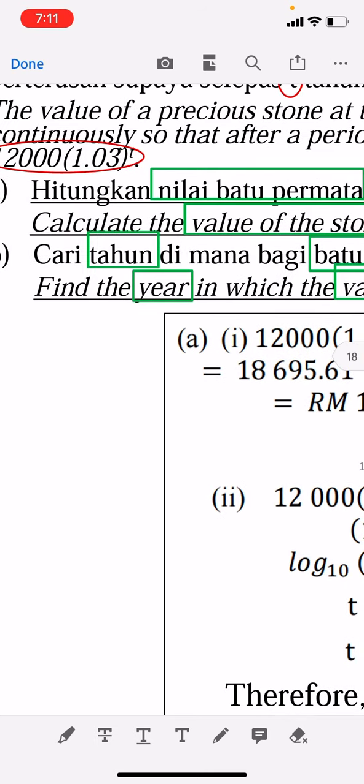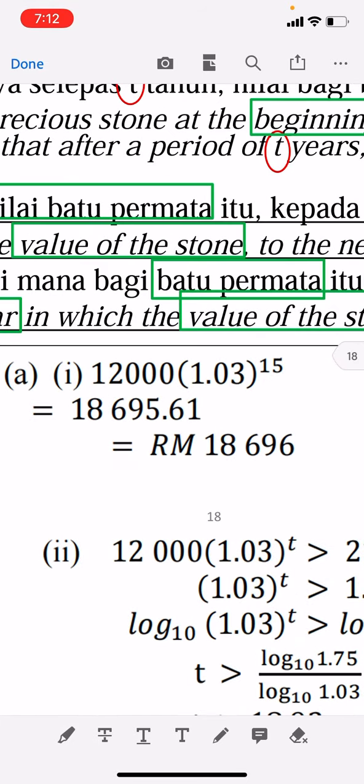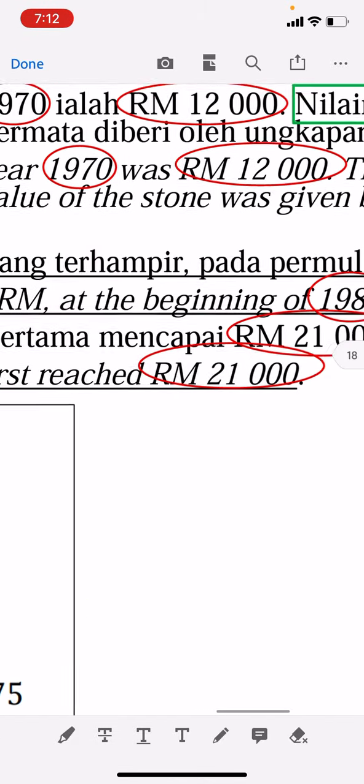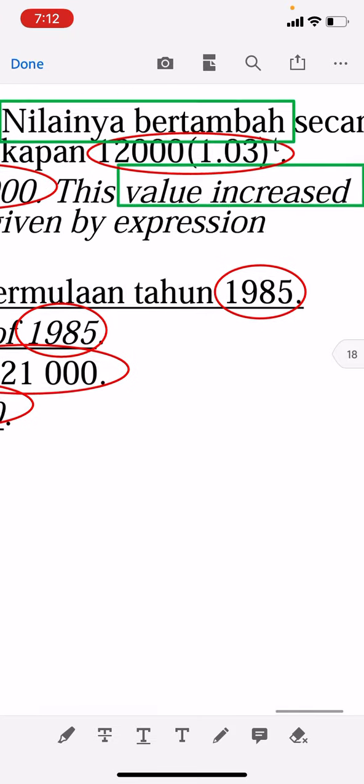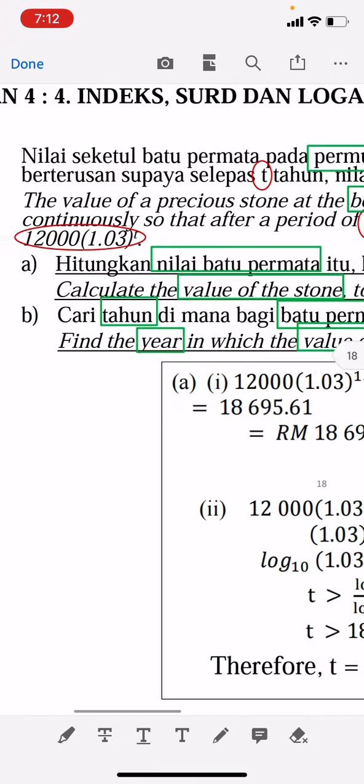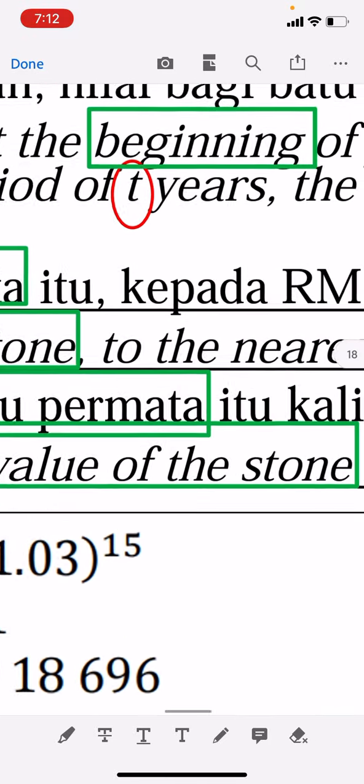Okay, so they will give you something like an application in solving a scientific or industrial problem. The value of a precious stone at the beginning of year 1970 was RM 12,000 in Malaysia. This value increases continuously so that after a period of years...